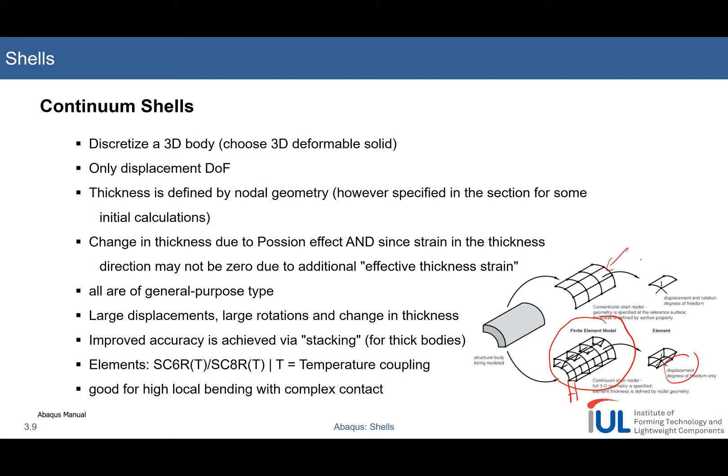And another thing is that it can have strains in the thickness direction, so you can have the change in thickness due to Poisson's ratio, as with the conventional shell elements, but also due to actual strain in the thickness direction.